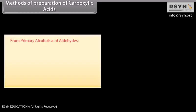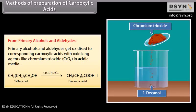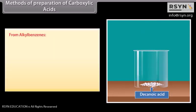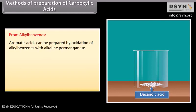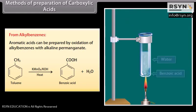Methods of preparation of carboxylic acids. From primary alcohols and aldehydes: primary alcohols and aldehydes get oxidized to corresponding carboxylic acids with oxidizing agents like chromium trioxide in acidic media. For example, 1-decanol reacts with chromium trioxide in acidic medium to form decanoic acid. From alkylbenzenes: aromatic acids can be prepared by oxidation of alkylbenzenes with alkaline permanganate; toluene reacts with potassium permanganate in alkaline medium to form benzoic acid.